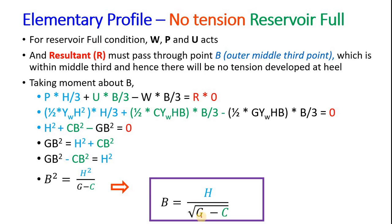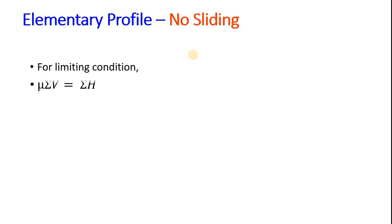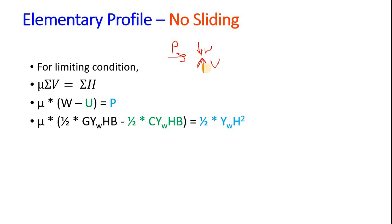Now let's see for no sliding condition. For no sliding condition, mu times summation of N must be equal to summation of T for limiting condition. This is summation of vertical forces and horizontal forces. This is W and this is U, and here we have P. So summation of vertical forces is W minus U, and horizontal forces is P.